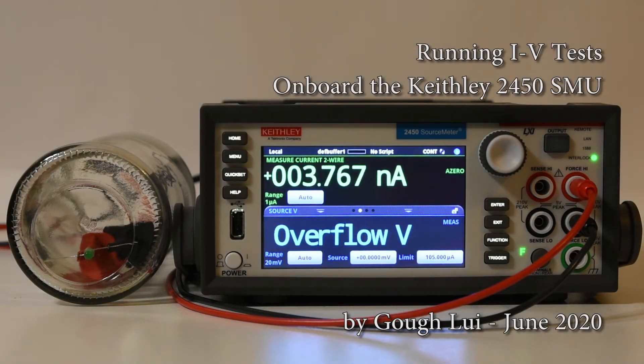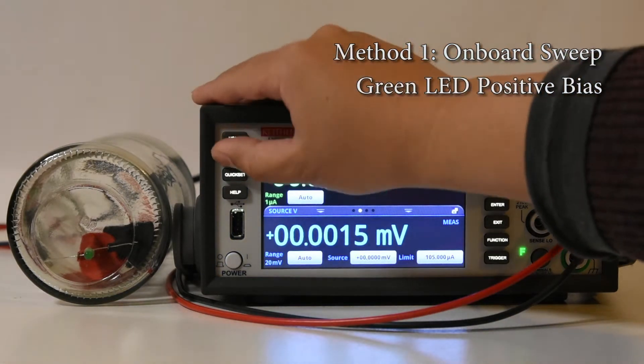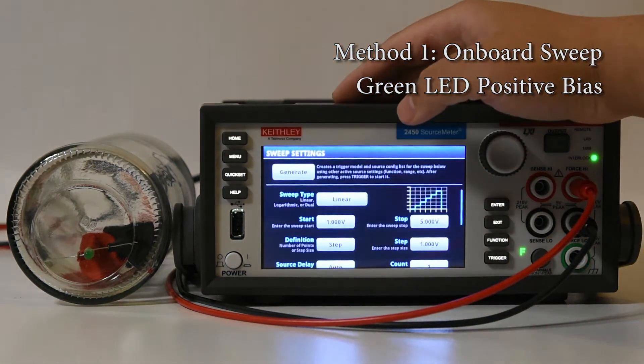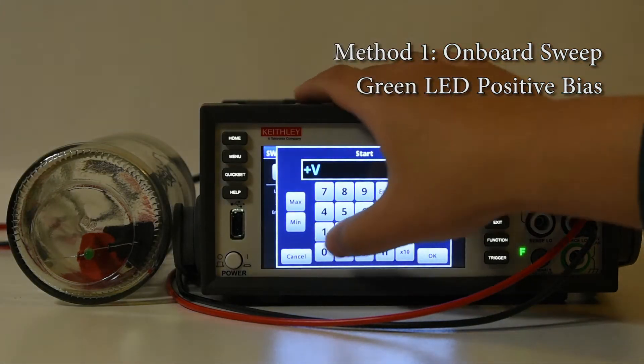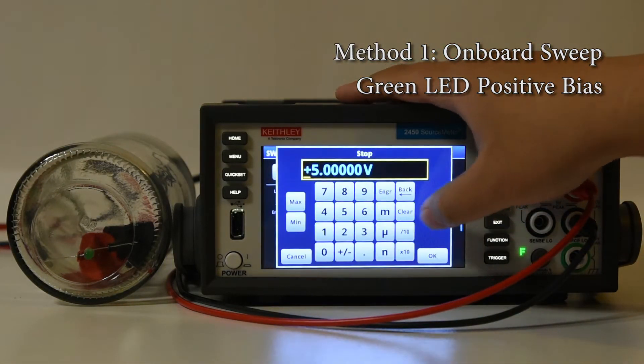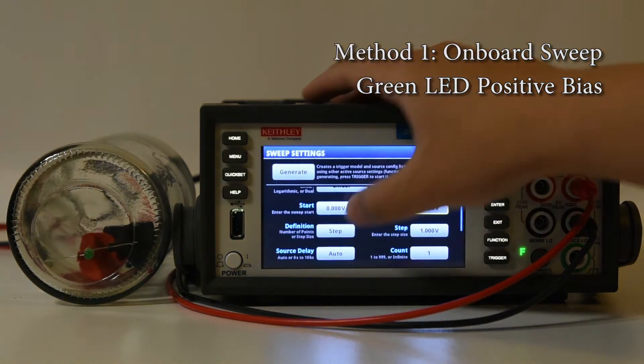The Keithley 2450 SMU is a versatile instrument with many onboard features. Using only the 2450 SMU's inbuilt sweep generator feature, it is possible to configure a sweep to characterize a green LED in positive bias.